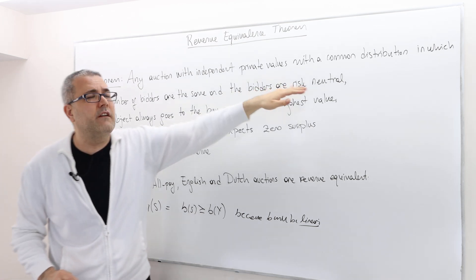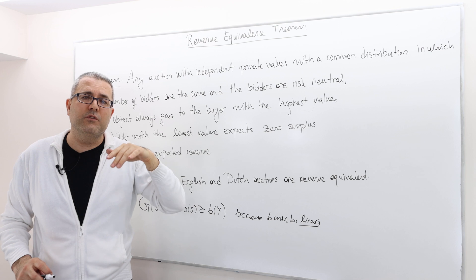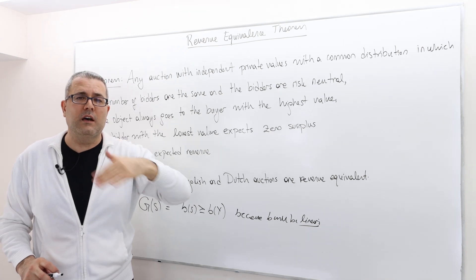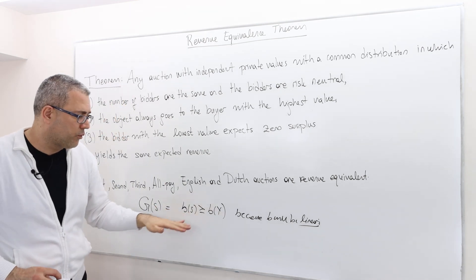However, if we don't have risk neutrality, then the bidding function may actually not be linear.